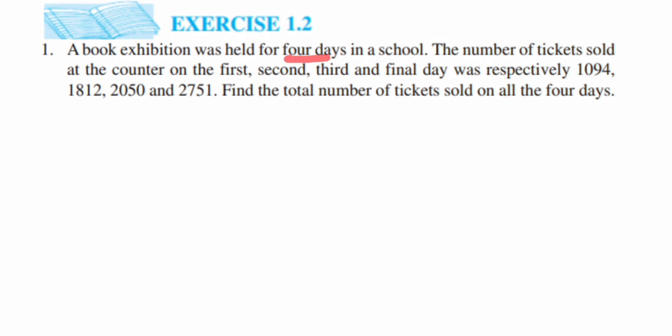How many tickets were sold they have given: for the first day it was 1094, second day it was 1812, and then we have 2050, and on fourth day it is 2751. They are asking us to find out total. Total means addition, so we have to add up all these tickets and then we have to get the answer. But the thing is we have to represent the answer properly, that means we have to write down the statements. So let's start solving this.